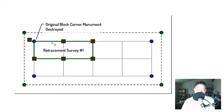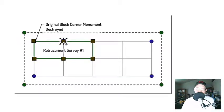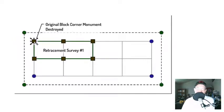There is a difference between these two monument types. The first type is the first monument ever set to mark a given corner — still a retracement monument, but the first one set for that corner. The second type is a monument set to replace an original monument that previously marked the original corner — it's a retracement monument, but it was set to replace an original controlling one.